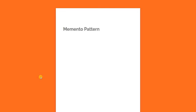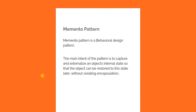Hello everyone and welcome to dotnet core central. In today's video I'm going to talk about the Memento design pattern, which is one of the Gang of Four design patterns. It is a behavioral design pattern. The main intent of this pattern is to capture and externalize an object's internal state so that the object can be restored to this state later without violating encapsulation.